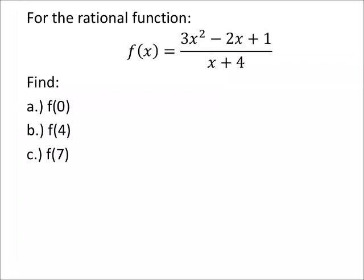We have this rational function: 3x squared minus 2x plus 1 all over x plus 4. So in this first example here, part a, find f of 0, or find f of 0. See, because it's usually f of x.